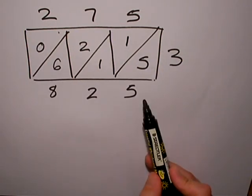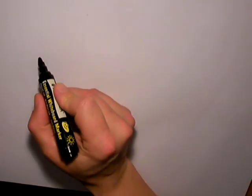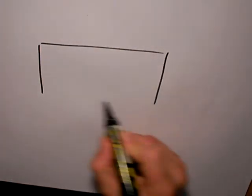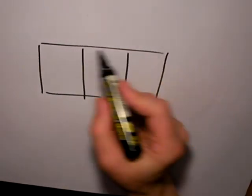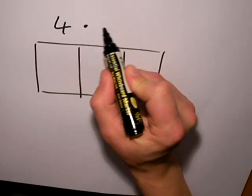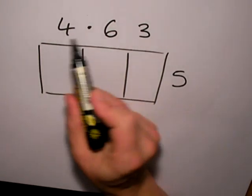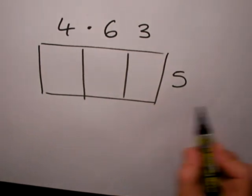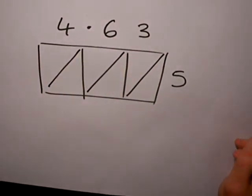The next example of short multiplication using the grid method, this time I'm going to multiply some money. I'm going to multiply 4 pounds and 63 pence by 5. I put the decimal point in, 4 pounds 63 multiply by 5. We don't worry about the decimal point until the end.